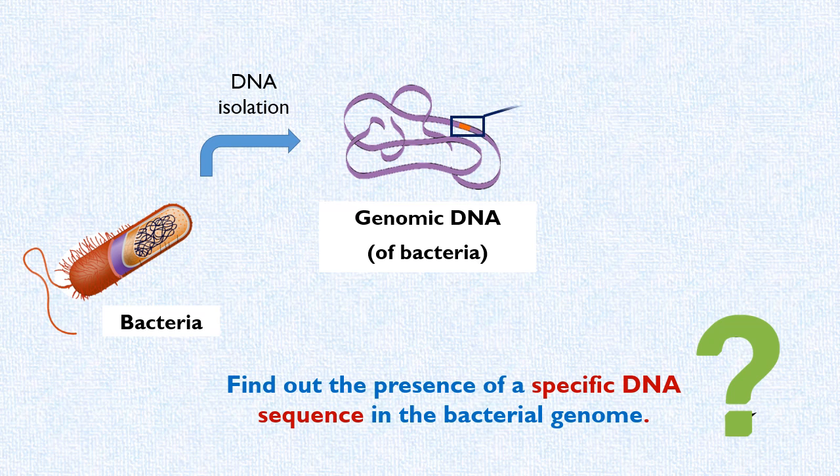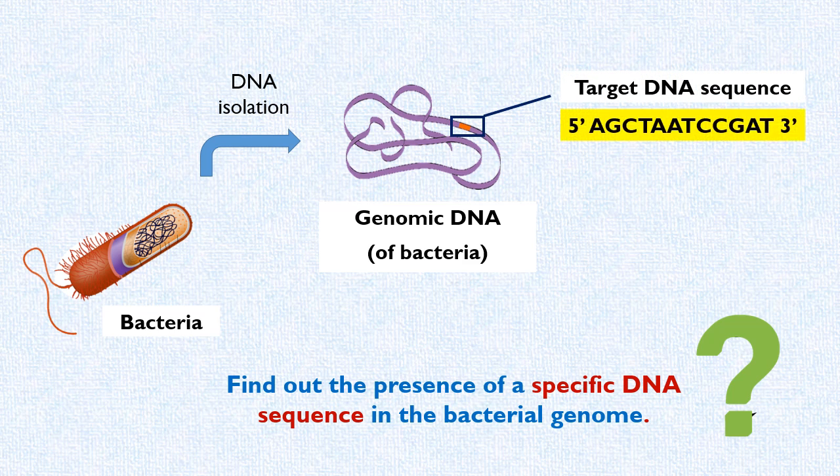Let's say the red region in this DNA is representing the target sequence. And suppose the nucleotide sequence of this DNA portion is this, in 5' to 3' direction.